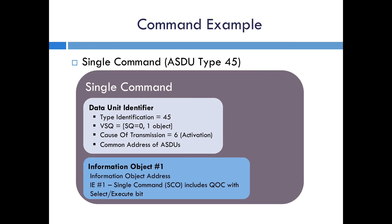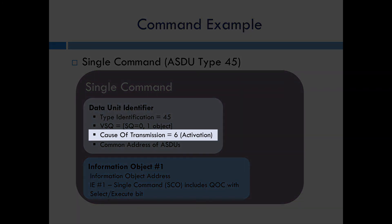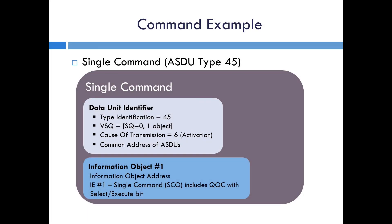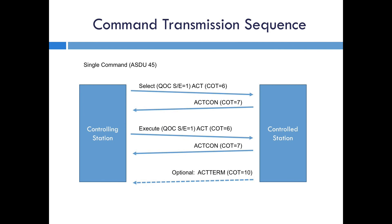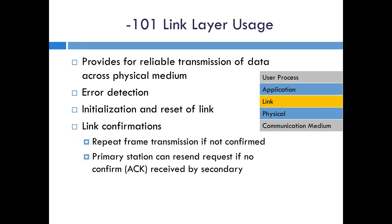Let's go back to the example of a command ASDU — the single command which is type 45. The cause of transmission when it first sends the request would be an activation, then it would get an activation confirmed back from the outstation. In the SCO you would have the bit for select or execute. In the full sequence this would first be sent with the select and a cause of transmission of activation, then the ACT-CON comes back, then the execute is sent with the ACT, then ACT-CON and ACT-TERM after the control is complete, and optionally the event can be sent to show the output status. That covers everything for the application layer — next up we'll go into the link layer, which the Triangle Microworks Source Code Library will handle most of for you.